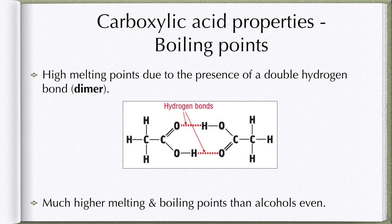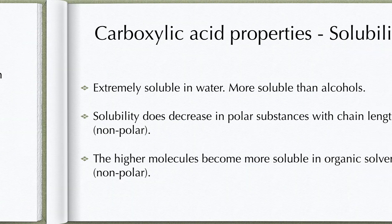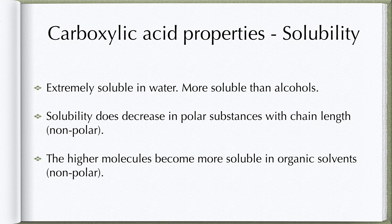Hydrogen bonding can occur between carboxylic acids; however, they are somewhat unique. Carboxylic acids can form two hydrogen bonds with one another — we call these dimers. This extra hydrogen bond increases the strength, and therefore carboxylic acids have a very high boiling point, higher than alcohols. Carboxylic acids are very polar because of the OH functional group, so they are more soluble in water than alcohols. Solubility in water decreases with increasing carbon chain length, while solubility in solvents increases with chain length.